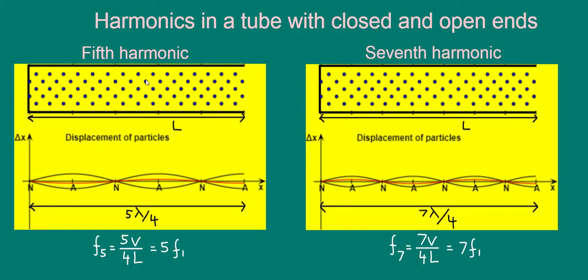For example, in the fifth harmonic here, we can see that five quarter wavelengths must fit into this length L.